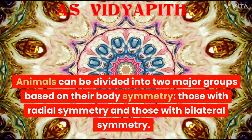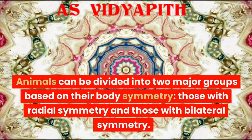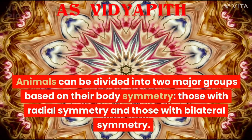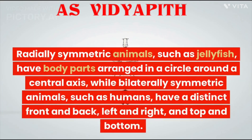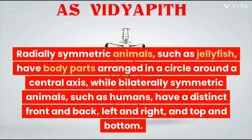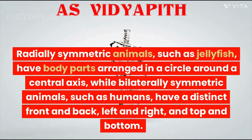Animals can be divided into two major groups based on their body symmetry: those with radial symmetry and those with bilateral symmetry. Radially symmetric animals, such as jellyfish, have body parts arranged in a circle around a central axis, while bilaterally symmetric animals, such as humans, have a distinct front and back, left and right, and top and bottom.